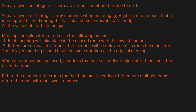You are given an integer n. There are n rooms numbered from zero to n minus one. You're also given a 2D integer array meetings, where meetings[i] equals (start_i, end_i), meaning a meeting will be held during the half-closed time interval from start_i up until end_i, where end_i is not inclusive. All values of start_i are unique. Meetings will be allocated to rooms as follows: each meeting takes place in the unused room with the lowest number. If there are no available rooms, the meeting is delayed until a room becomes free, with the same duration as the original. When a room becomes unused, meetings with an earlier original start time get priority. Return the room that held the most meetings; if there's a tie, return the lowest-numbered room.